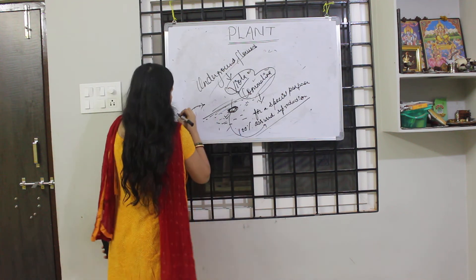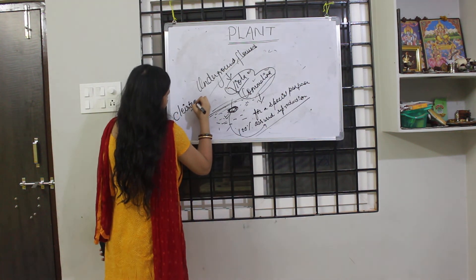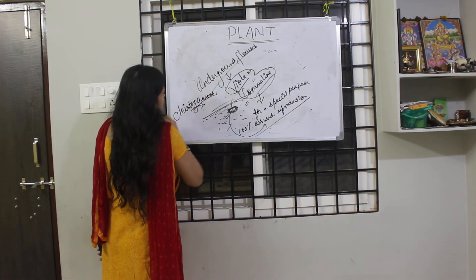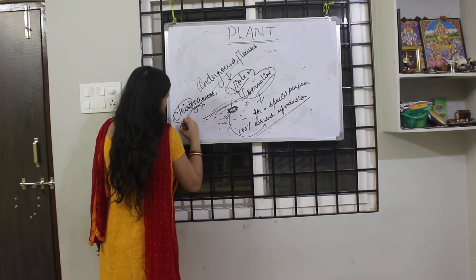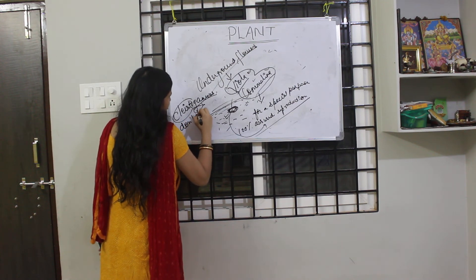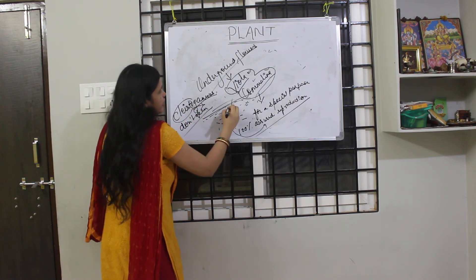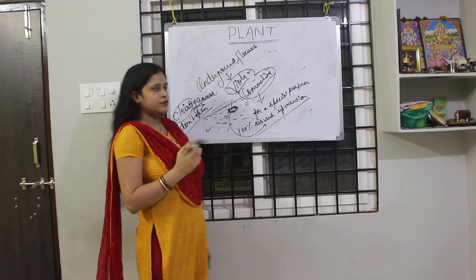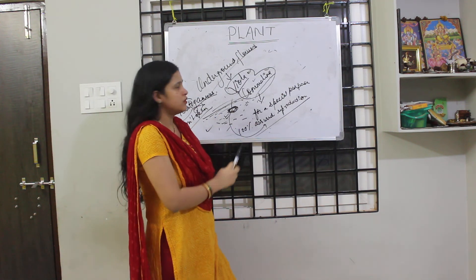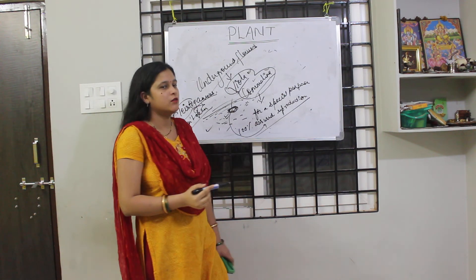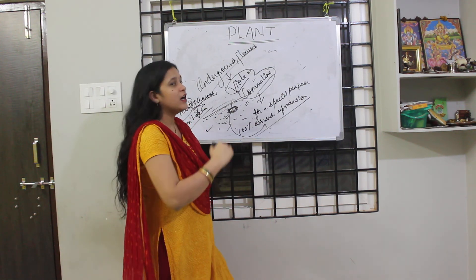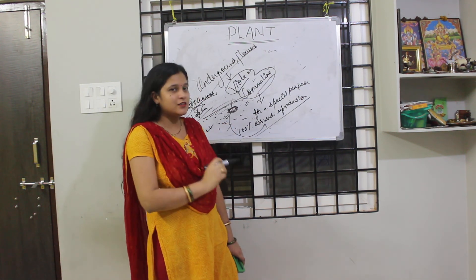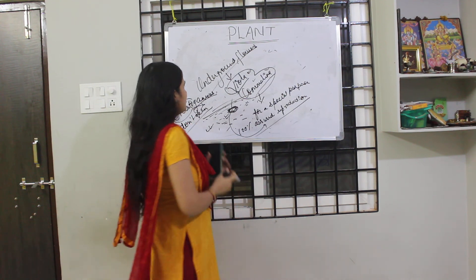Such flowers are called cleistogamous flowers. Cleistogamous flowers — 'cleisto' means 'do not open.' These flowers don't open at all, and they are underground. So if someone tells you that only roots are underground, you can say: No, I know that some flowers are underground and some stems are underground too.